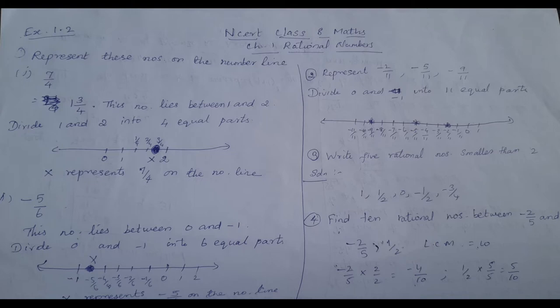Divide 0 and minus 1 into 6 equal parts. Then mark the 5th part: 1, 2, 3, 4, 5, 6 — mark x at the 5th part. So x represents minus 5 by 6 on the number line.